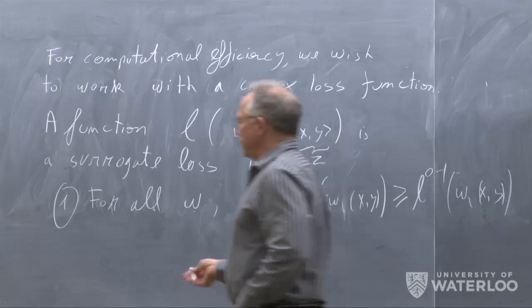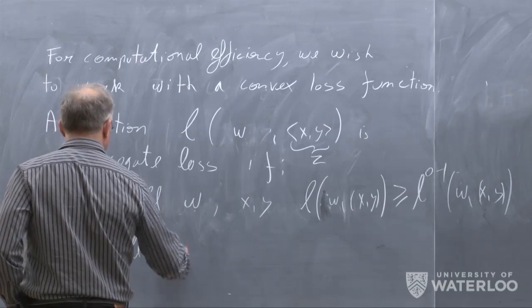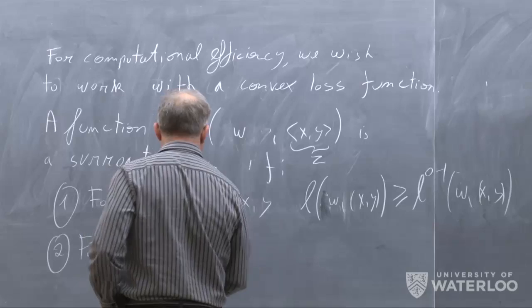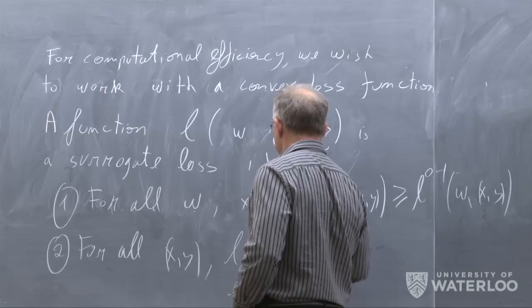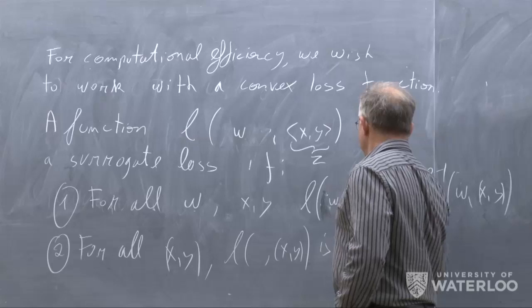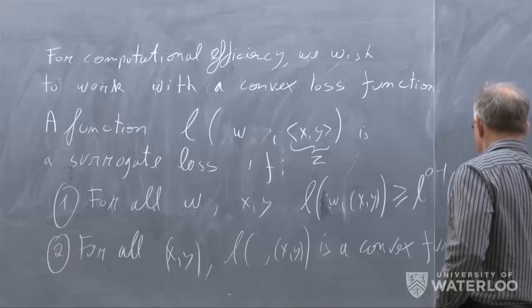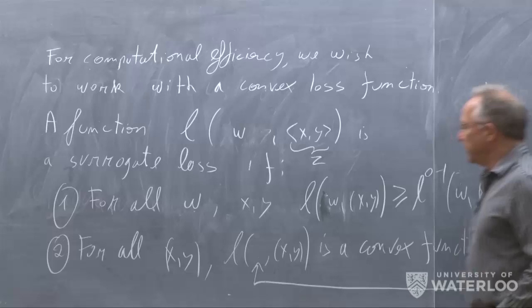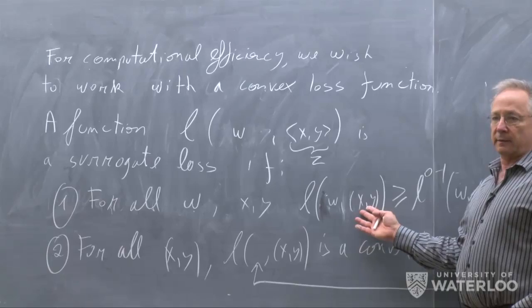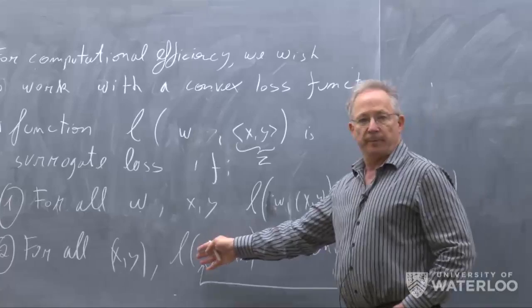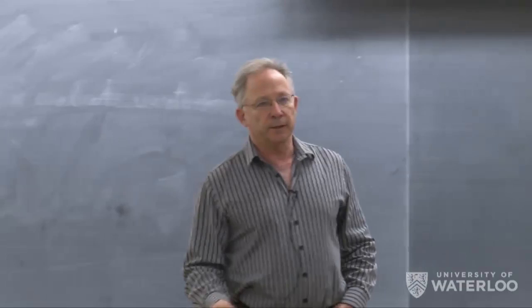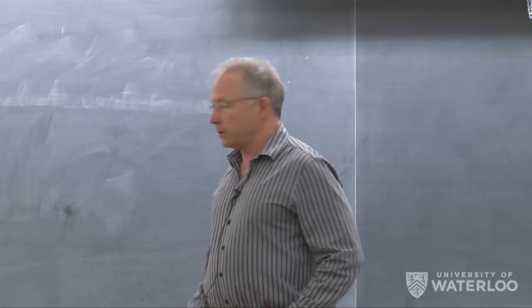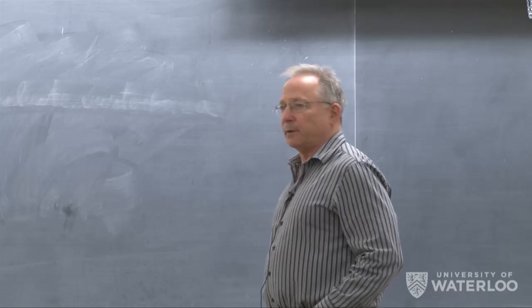The second requirement is that for all X, Y, this function L, if I fix the parameters X, Y, is a convex function of W. Originally this function has two inputs: W and the sample point. If I fix the sample point, it becomes just a function of W, and I can talk about the convexity of such a function. So we want that this function will be convex. That's our requirement for a surrogate loss.